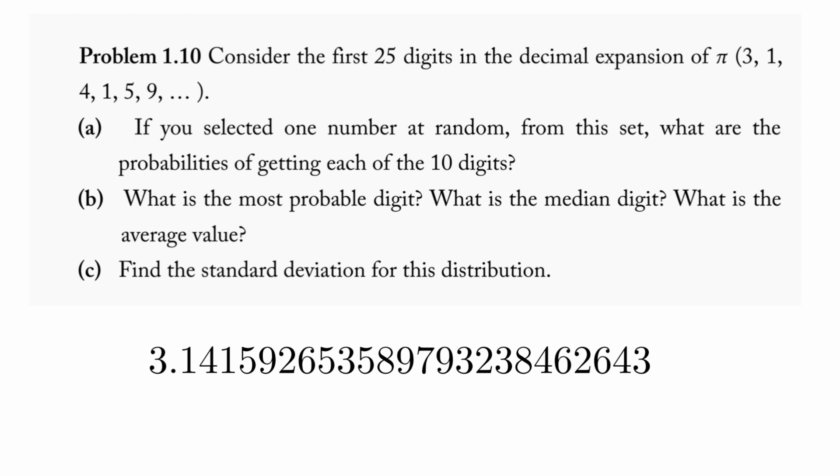Part a says if you selected one of those digits at random, what are the probabilities of getting each of the 10 digits, so zero through nine.